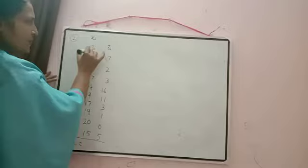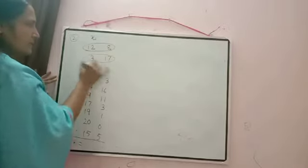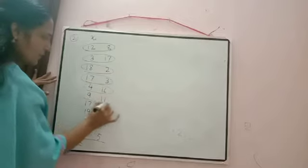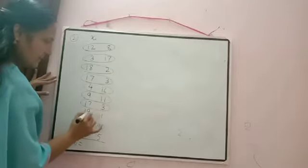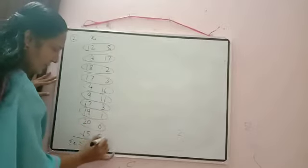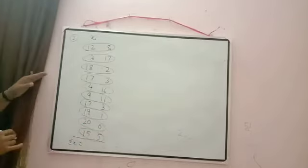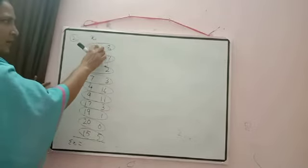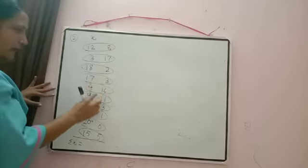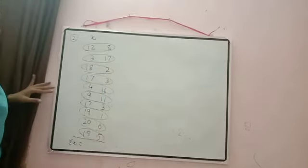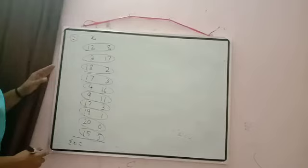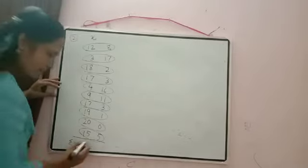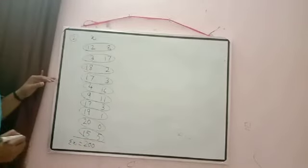To make addition easy, group pairs that sum to 20: 12+8=20, 13+7=20, 18+2=20, 20+0=20, 16+4=20, 11+9=20, 17+3=20, 15+5=20. We get 20 ten times. So Σxᵢ = 20 × 10 = 200.